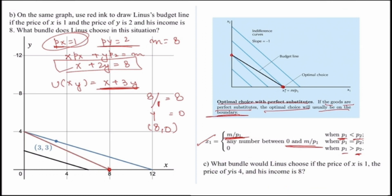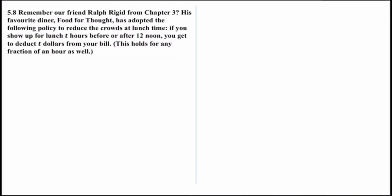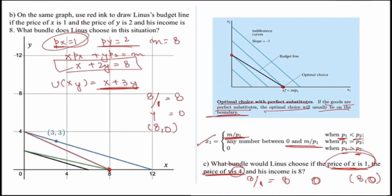The next part asks what bundle Linus would choose if the price of x is 1 and the price of y is 4. Again, the price of x is lower than the price of y, so he only chooses to spend his entire income on good x. This gives him 8 units of good x and zero units of good y, so his consumption bundle is again (8, 0). That was all for this video.